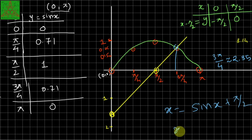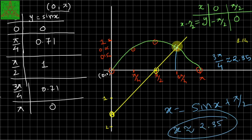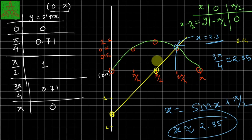Converting 3π/4 to a decimal gives approximately 2.35. So the root of x = sin(x) + π/2 is approximately x ≈ 2.35. That's it for this video. If you like this video, please press the like button. If you have any comments, suggestions, or questions, please drop them in the comment box below. See you in the next video — bye-bye!